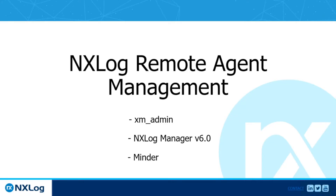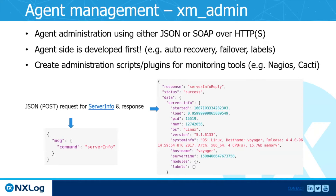NXLog Remote Agent Management starts with the APIs available on the agents themselves — the XM Admin module. Agent administration can be done either through JSON or SOAP over TLS, and that doesn't require any additional product. From the command line interface, you could call an API request through JSON, such as a JSON POST request to get the server info from a particular agent or group of agents.